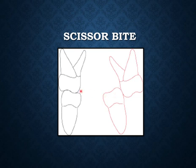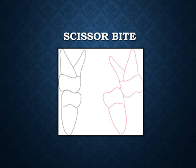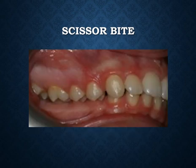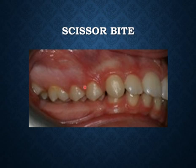This is the normal buccal overjet. In scissor bite, the lower teeth occlude lingually or palatally to the maxillary posterior teeth. Here is a case of scissor bite where the lower posterior teeth occlude lingually to the upper posterior teeth, or the maxillary posterior teeth occlude buccally to the lower mandibular posterior teeth.